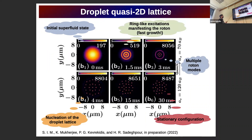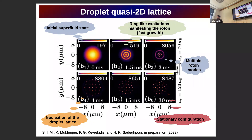Here you see density snapshots when quenching from a superfluid state towards the droplet regime. Again ring-like excitations appear, which grow faster this time because we go deeper into the droplet regime — the growth rate of the instability becomes larger. This instability causes the breakup of the individual rings, which is the admixture of higher-lying roton modes, and this procedure results in the dynamical nucleation of the droplet cluster, which in the long-time dynamics becomes stationary.